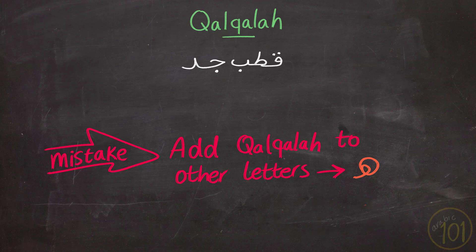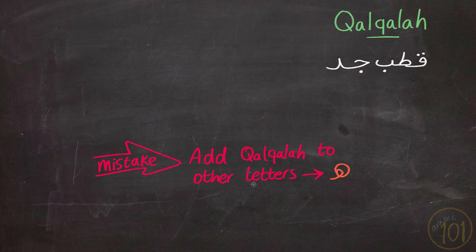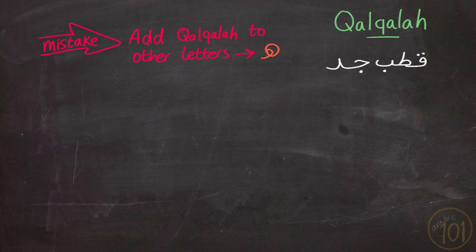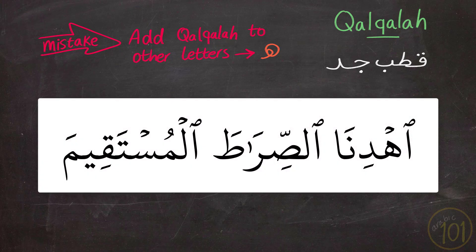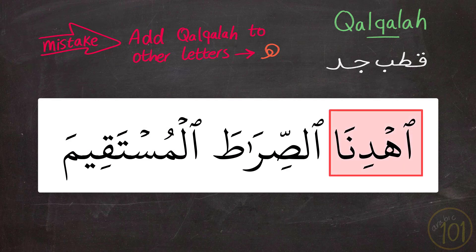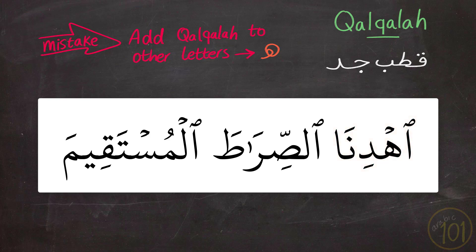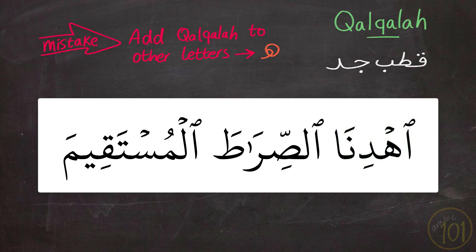Let's have a look at some examples to understand this even better. The first example will highlight how adding qalqala to the letter ha will sound, and how it should properly be pronounced. First I will show the mistake and let you hear what it sounds like so that you can recognize it if you have this problem, and afterwards I will show you how to correct it.